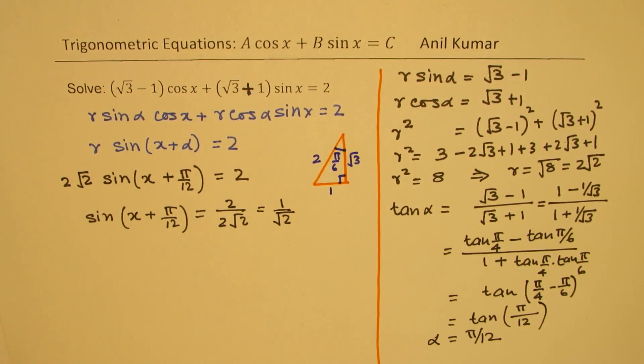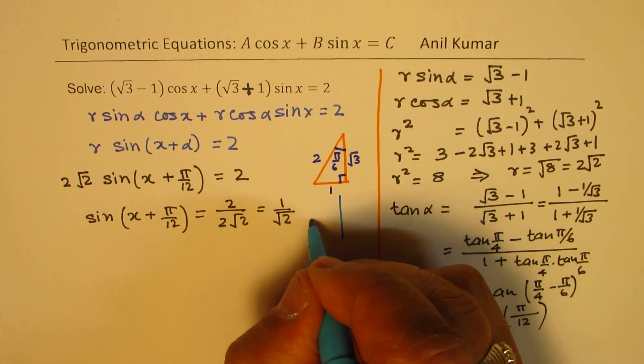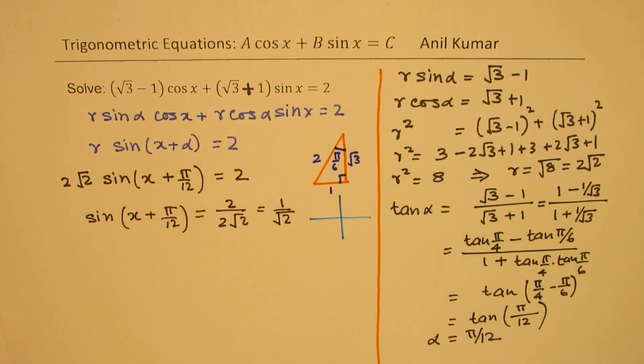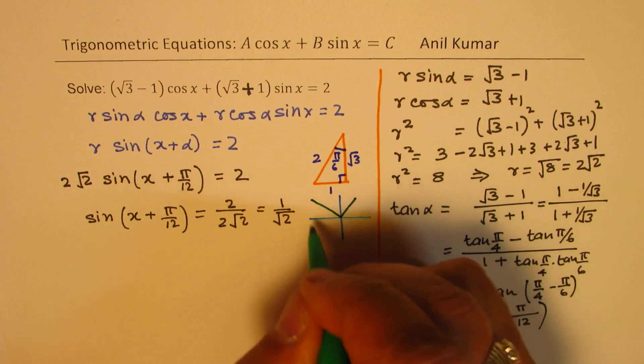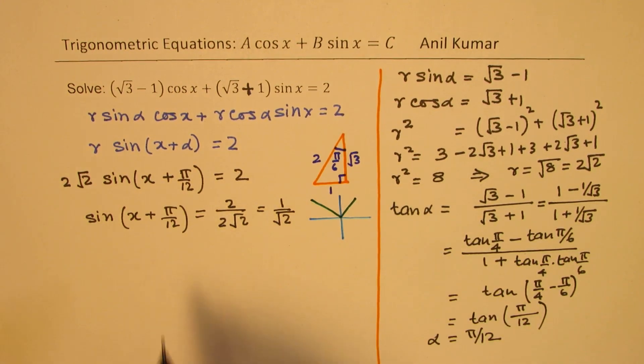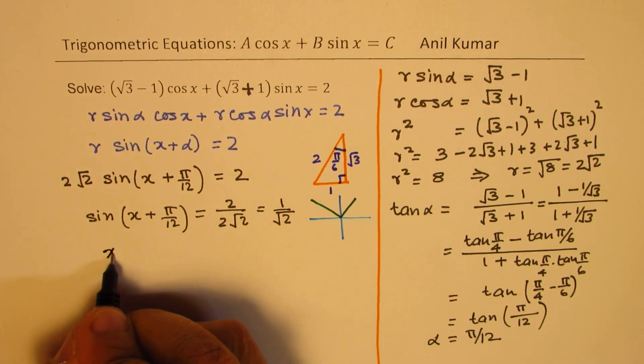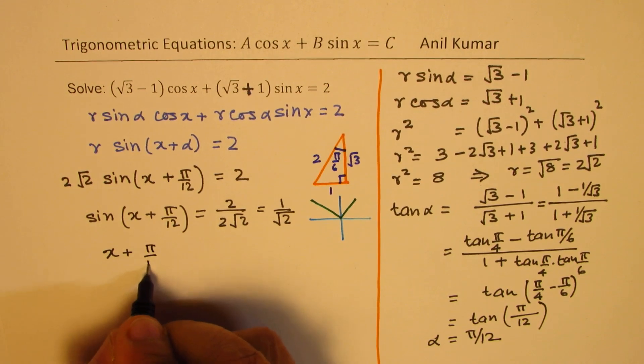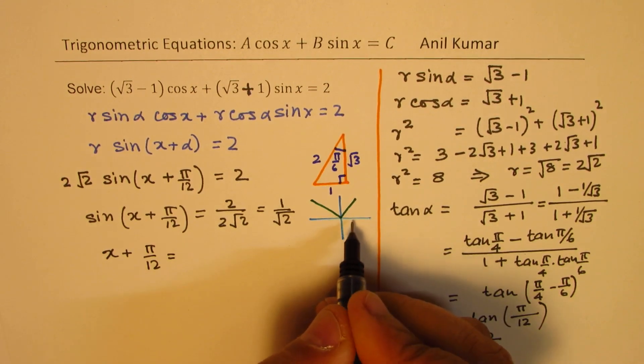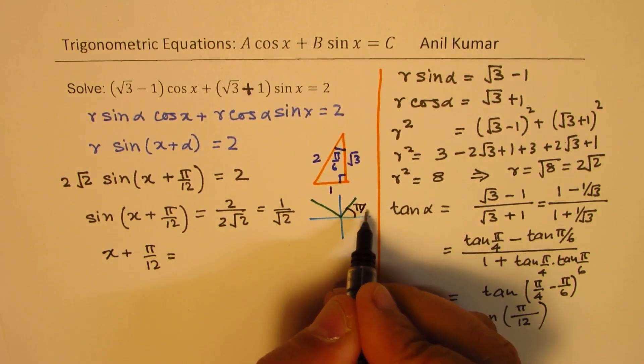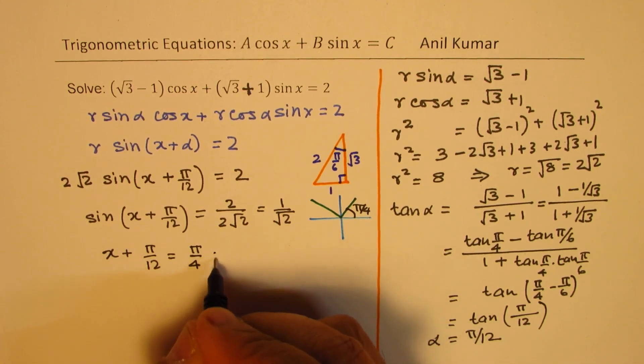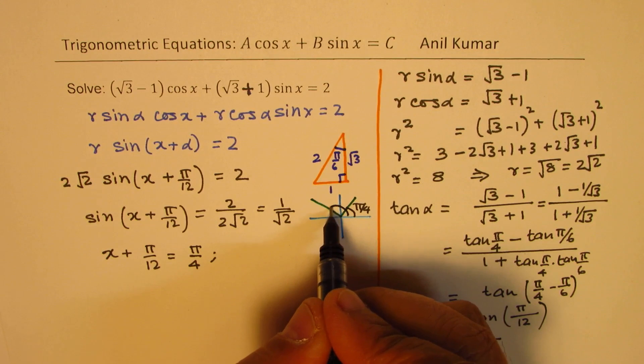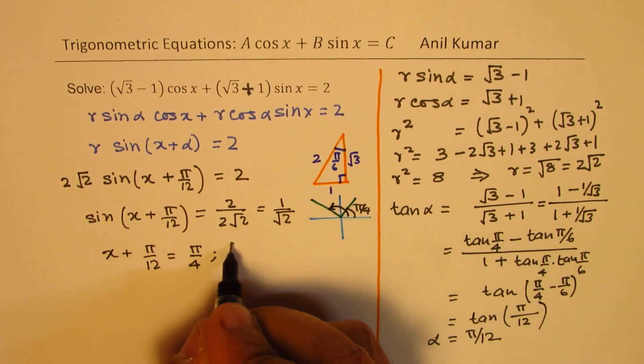Now as far as sine is concerned, it is positive in quadrant 1 and also in quadrant 2. So those are the two angles which we are looking into. So we can now say that x plus pi by 12 is equal to this angle pi by 4 and also this angle 3 pi by 4.